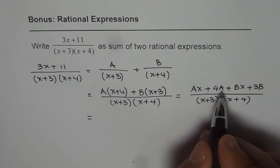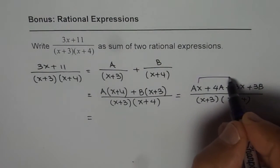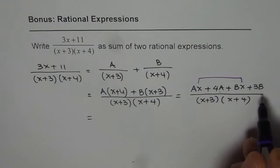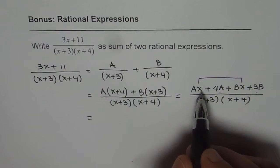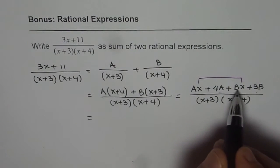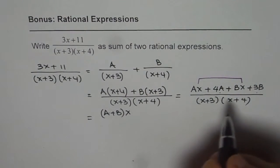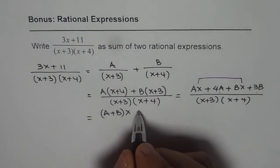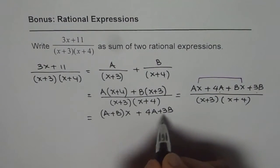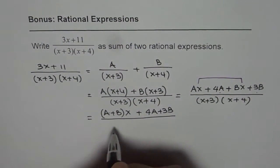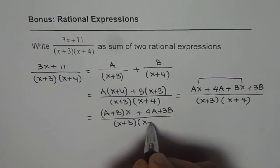So what do we get? If I take x common from these two terms, let's combine these two terms with x and then treat them as constants. Then we get this term as (A plus B). We are taking x common and the constant for us is 4A plus 3B. Denominator is product of (x plus 3) and (x plus 4).